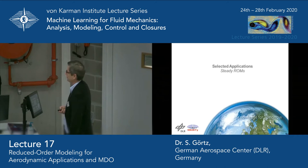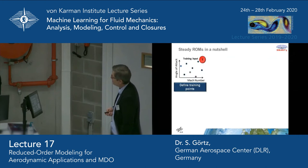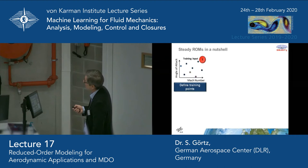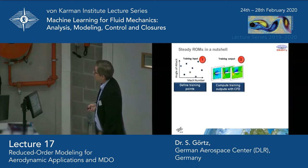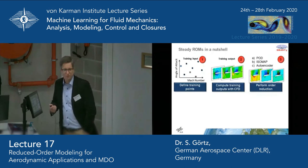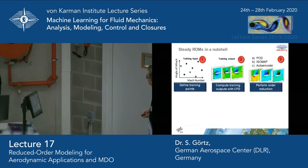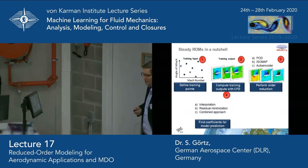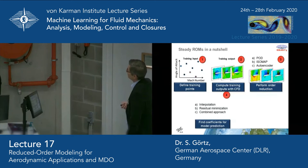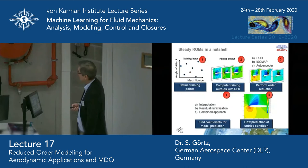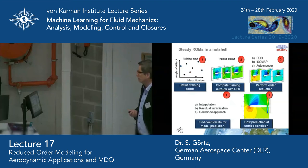For steady flow problems, we have different parameters — Mach number and angle of attack — and we define training points using Latin hypercube sampling, optimized Latin hypercube, and other methods. We compute training data with a CFD code to get different snapshots, then apply the dimensionality reduction step. We use POD, but also isomap and autoencoders, to then predict the POD coefficients or isomap vector weightings, or use residual minimization in the POD or isomap subspace, to find model coefficients and predict flow solutions on the surface or volume at untried flow conditions.